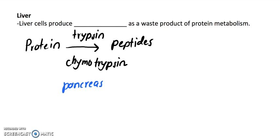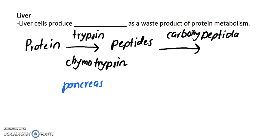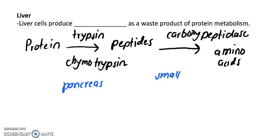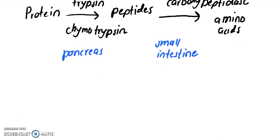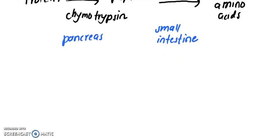After that, an enzyme in the small intestine called carboxypeptidase turns these smaller peptides into amino acids. This comes from the small intestine. Your liver then takes these amino acids and breaks them down even further.